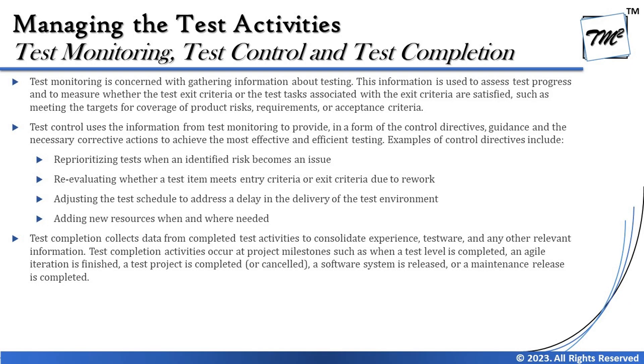According to the syllabus, test monitoring is concerned with gathering information about testing. This information is used to assess test progress and to measure whether the test exit criteria, or the test tasks associated with the exit criteria, are satisfied — such as meeting the target for coverage of the product risk, requirements, or acceptance criteria. In simple words, anything you do can be measured and must be monitored for ongoing progress, and if a deviation is observed, we must take appropriate control action.